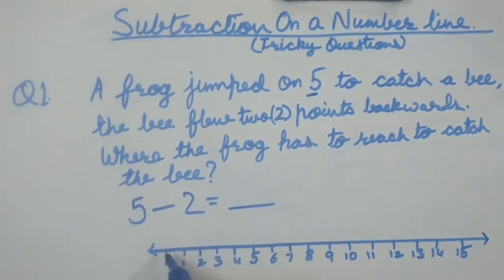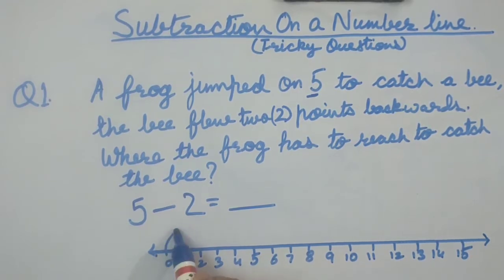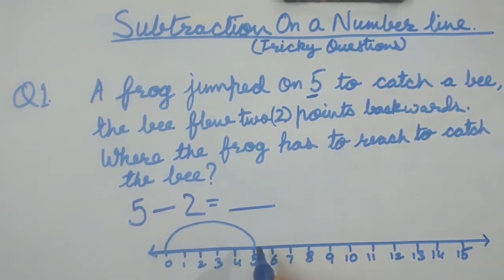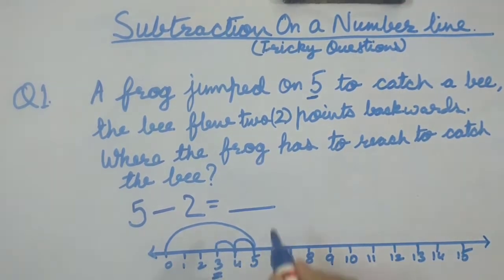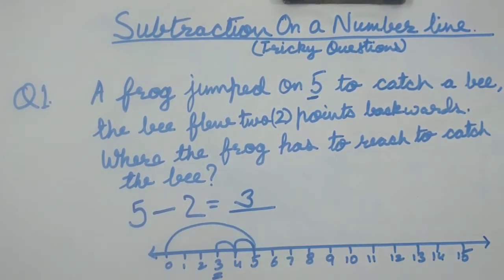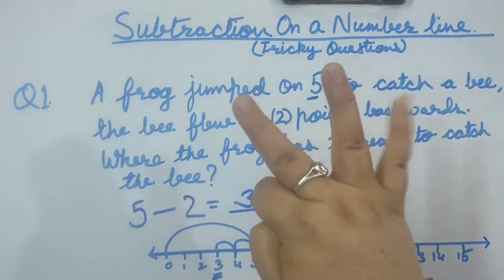You all know, we will start from 0. First step will be forwards, jumping to 5. Then the bee came 2 backs. So 1 and 2. Our answer came out to be 3. Checking on our fingers, 5 fingers out, 2 fingers down. Answer is 3.